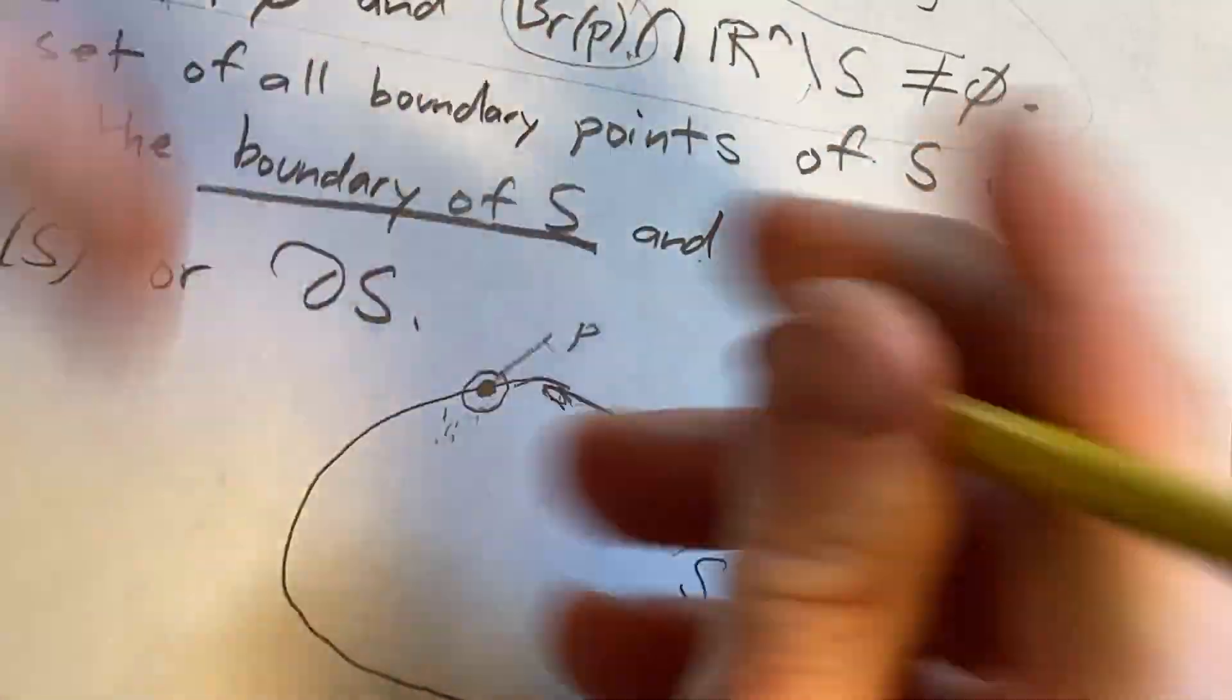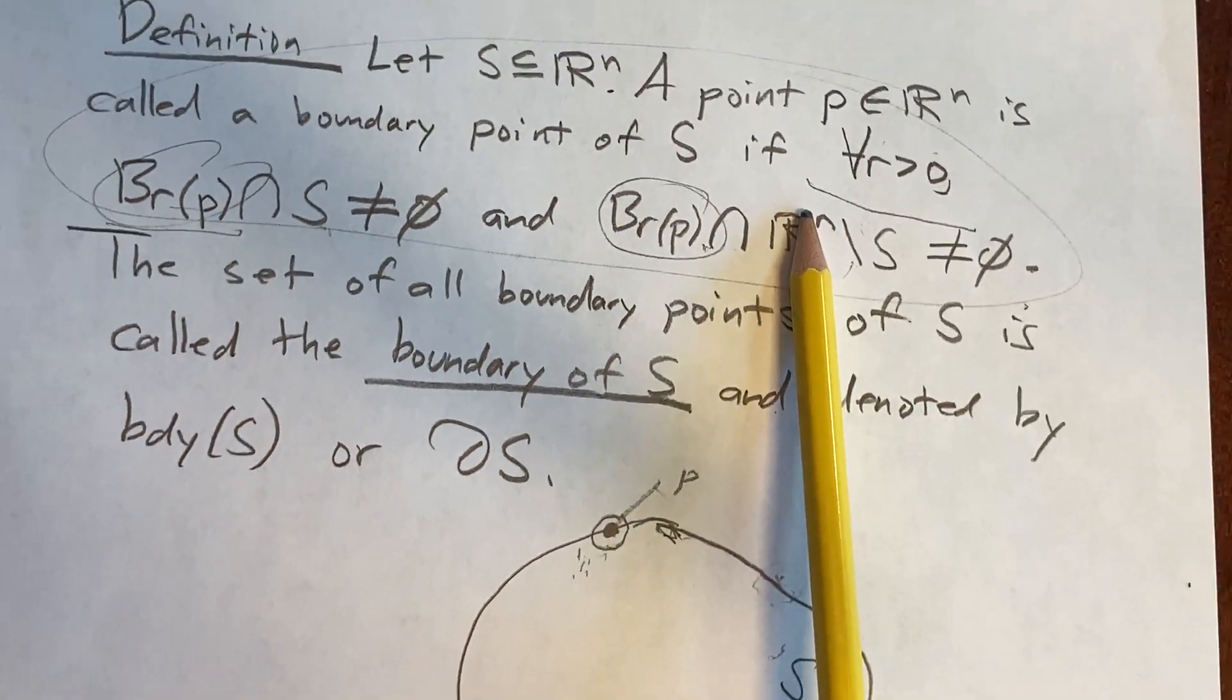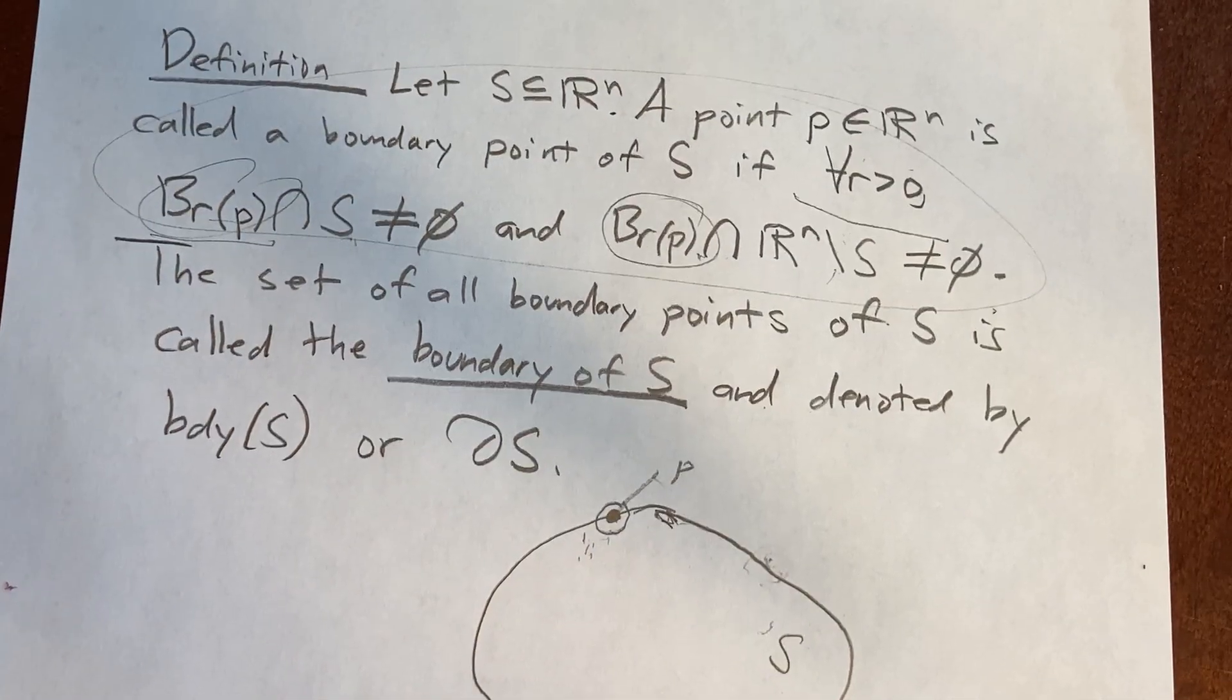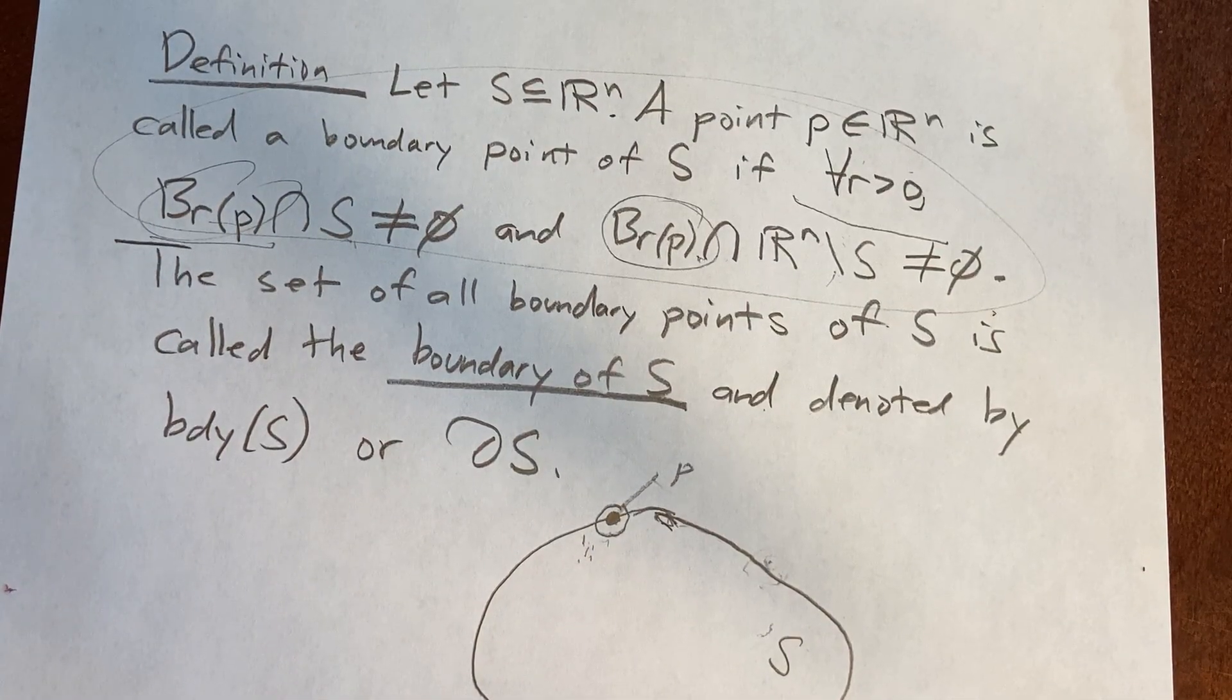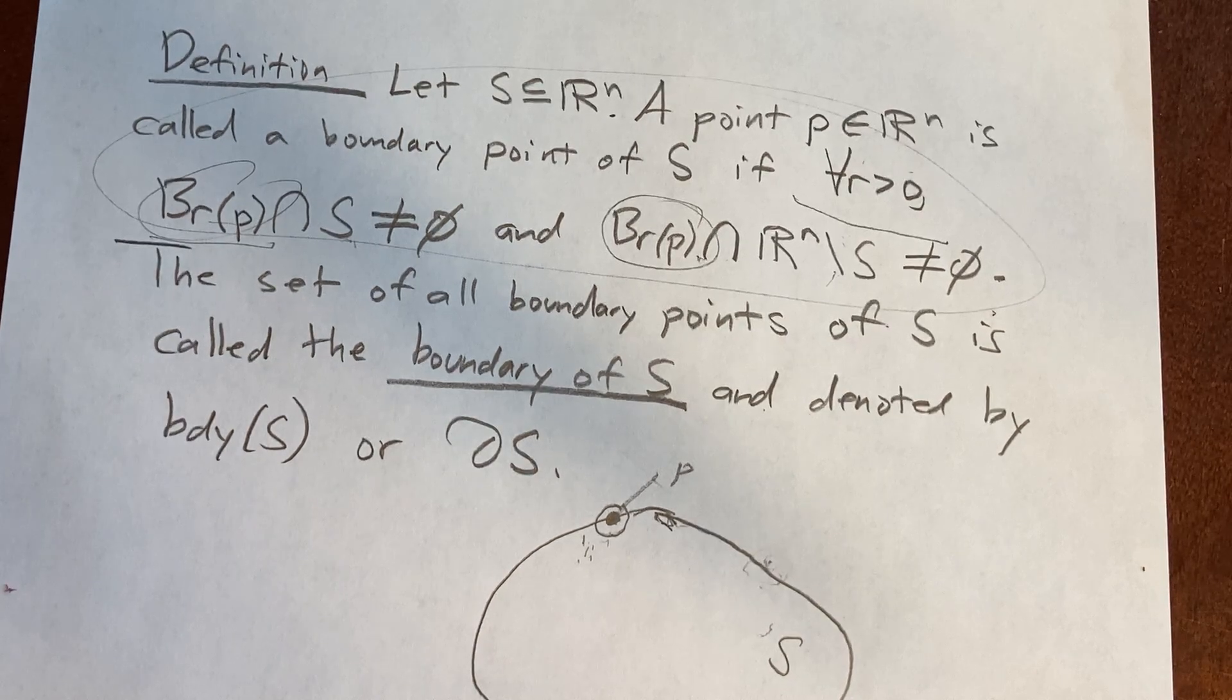So that's why you have the for all condition. It forces it to actually be on the boundary intuitively. So hopefully that made a little bit of sense. That's my attempt to explain this definition, and there's other ways to explain it, I'm sure.